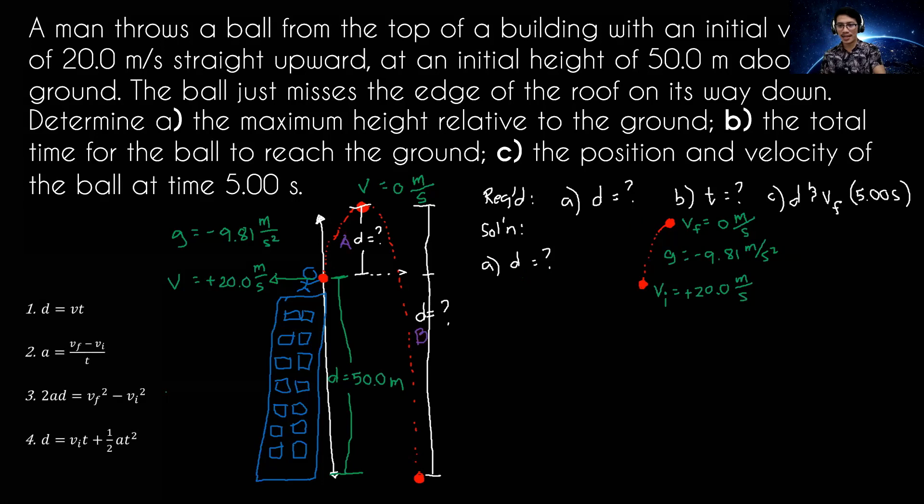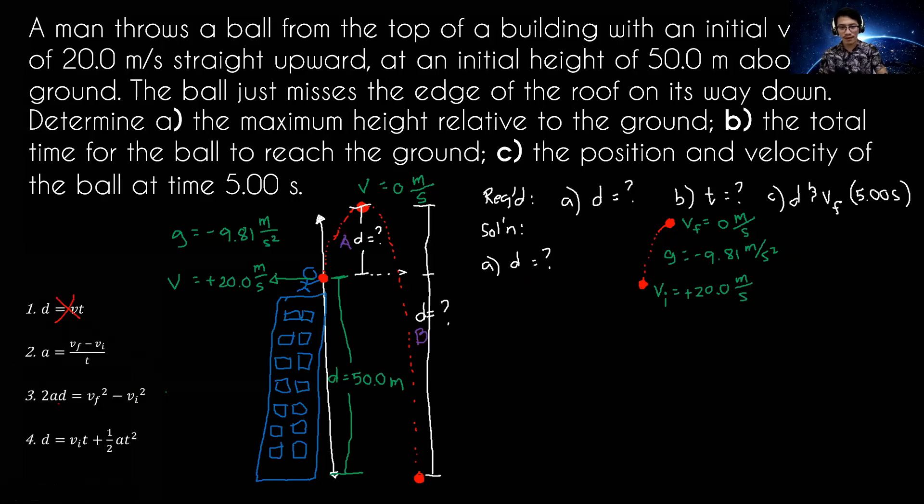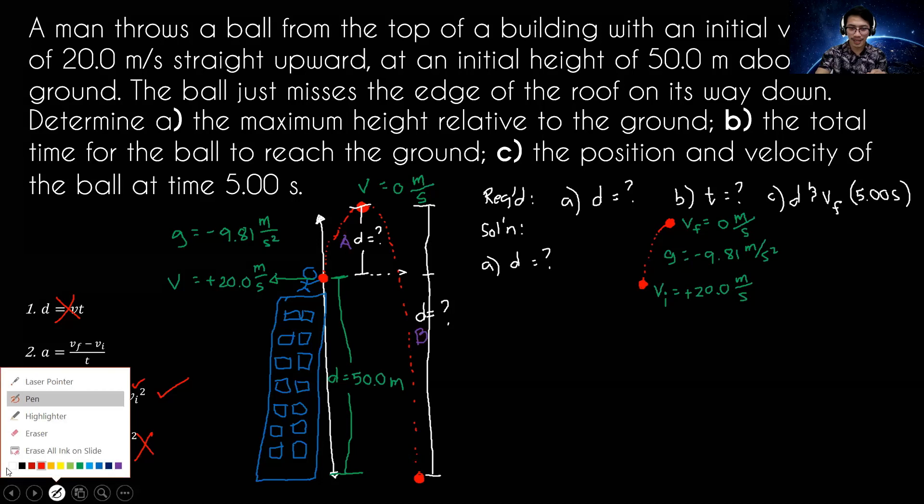So we are going to go back to the equations. What we're looking for is displacement. So where in our equations do we have displacement? We cannot use this one. We have equation 3 and equation 4. So let's check first equation 3. Do we have acceleration? Check, that's the acceleration due to gravity. Do we have VF? We have VF. We also have VI. So equation 3 is complete. That means we can use equation 3. Do you follow? How about equation 4? Can we use equation 4? No, because we don't have time. We don't have time to solve. Question. So we are going to use equation 3.